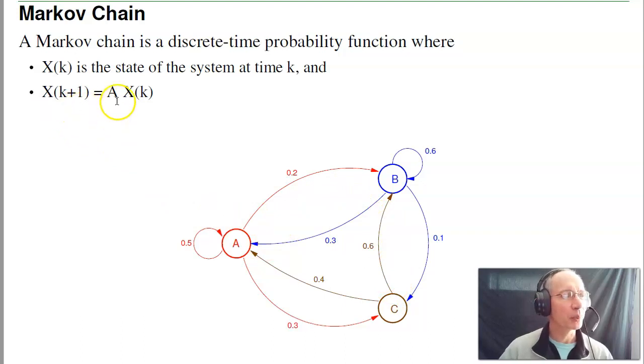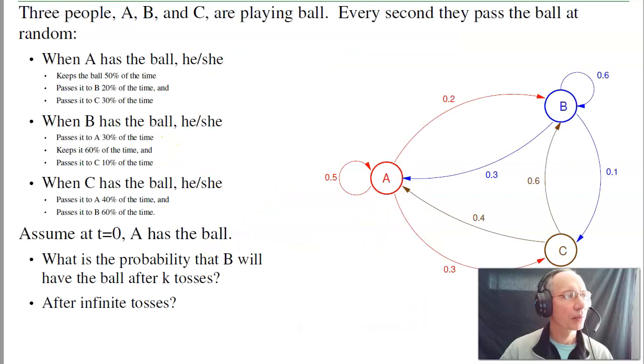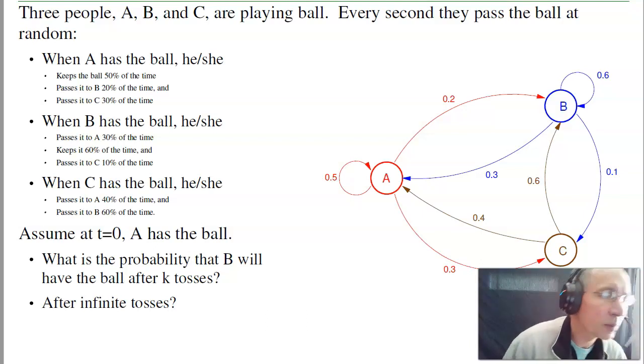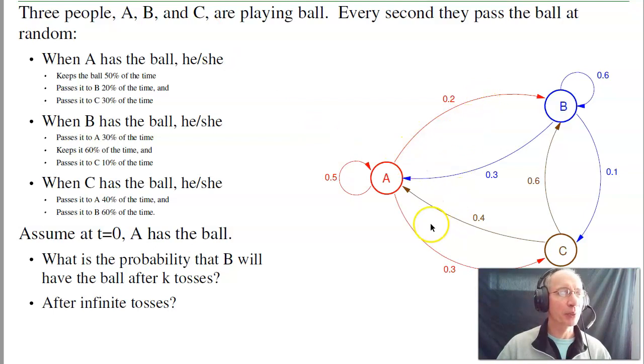It's a discrete time system. X of k plus one is some state transition matrix A times X of k. Oftentimes we'll do a bubble diagram expressing the probabilities of going from one state to the next. If A has the ball at time equals zero, what is the probability that B has the ball after k tosses? After an infinite number of tosses? This is the type of problem that Markov chains are designed to solve.